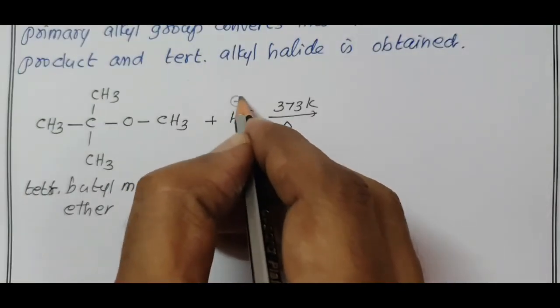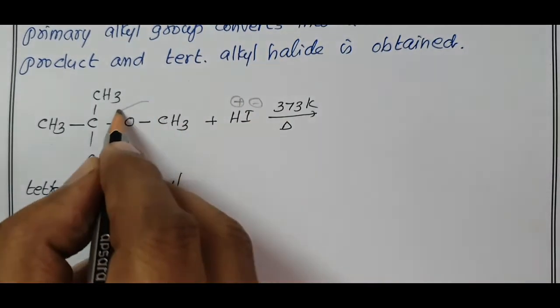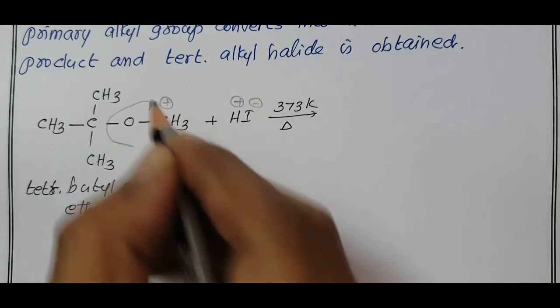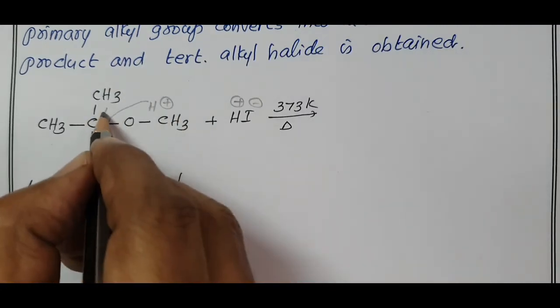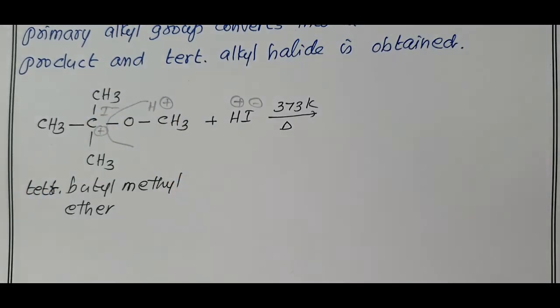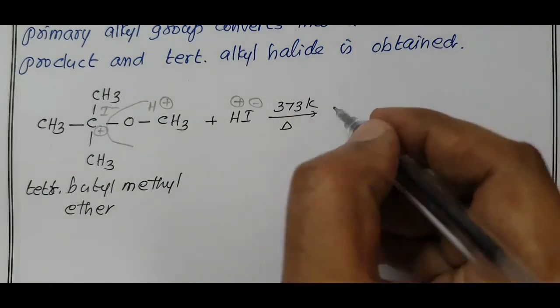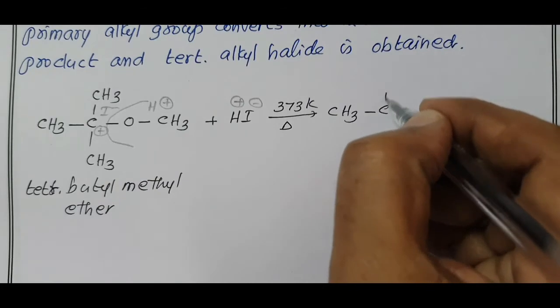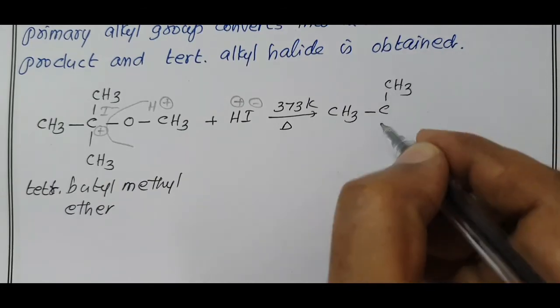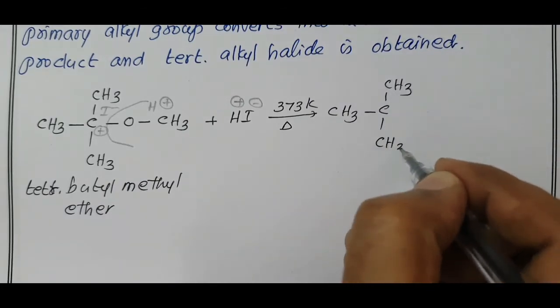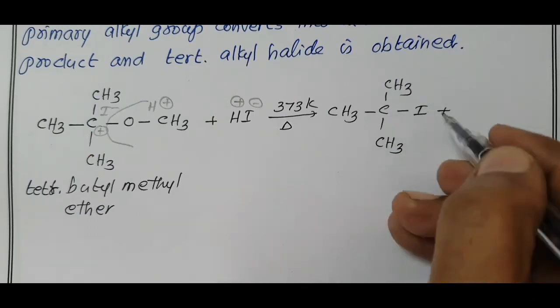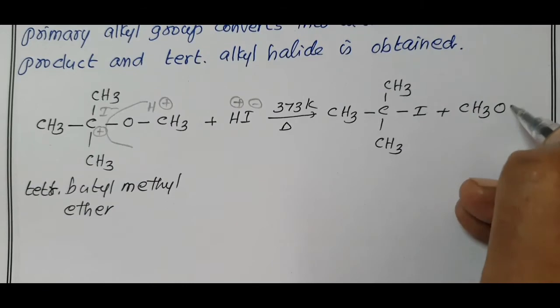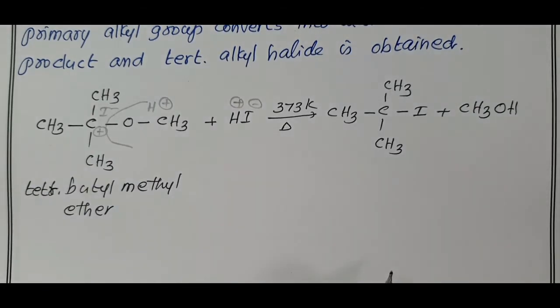H plus is added to methoxy minus. Methyl alcohol is formed as a major product, along with tertiary butyl iodide. What are the products formed? CH3-C-CH3-CH3-I, tertiary butyl iodide, 2-iodo-2-methylpropane, and the main product is methyl alcohol methanol.